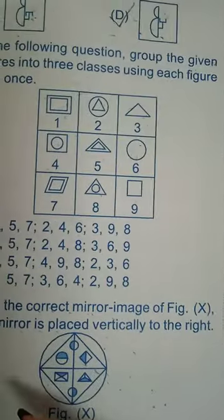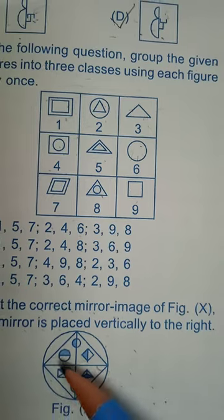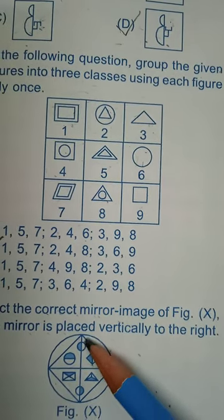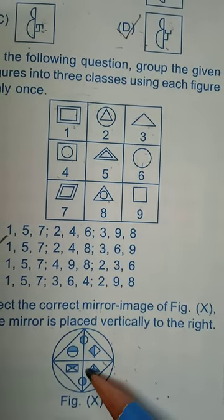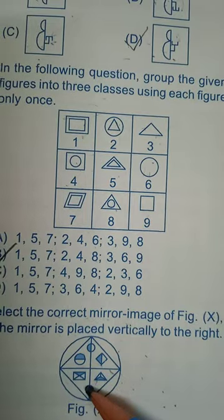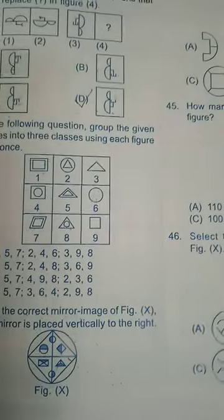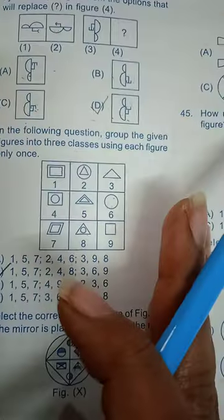What happens in the mirror image? It comes in the mirror image — it doesn't come from this type. It is in the water image. It means you have left to right — left to right, not up-down. Up-down is in the water image.